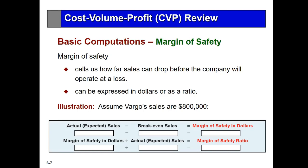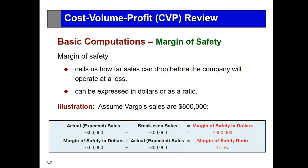The margin of safety tells you how far sales can drop — in percentage or absolute dollars — before the company is in a negative position. In this case, the margin of safety expressed in dollars is $300,000. It's more relevant to take the margin of safety in dollars as a ratio of actual sales. We know that business activity can drop 37.5% before this company would be in a loss position.